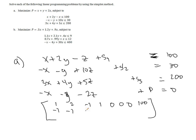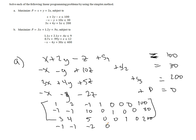The second row is negative 1, negative 1, 10, then 0, 1, 0, 0, equals 30. The third row is 3, 4, 5, then 0, 0, 1, 0, equals 200. And finally, the objective function row is negative 1, negative 1, negative 2, then 0, 0, 0, 1, equals 0.